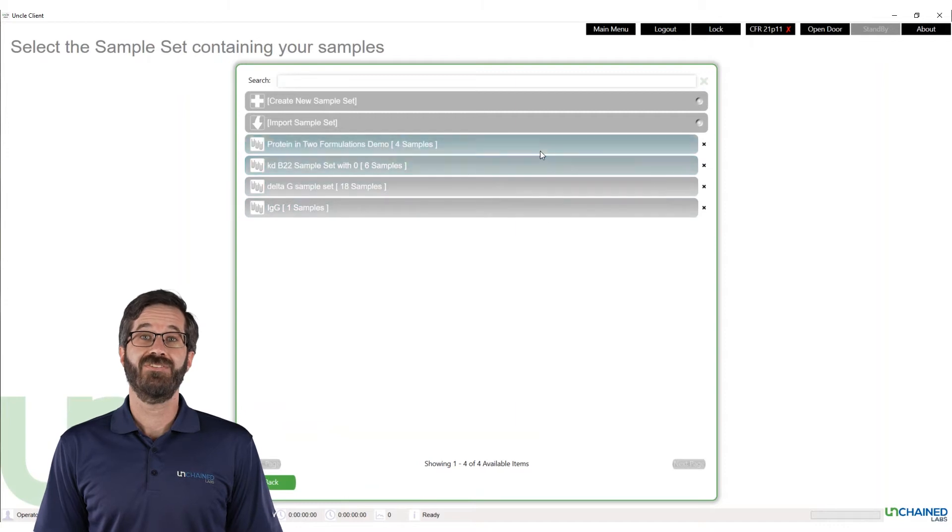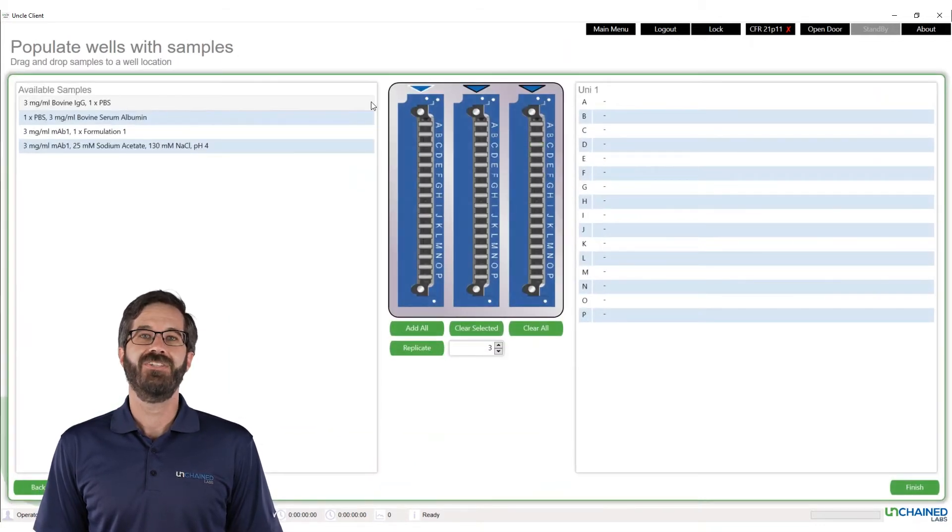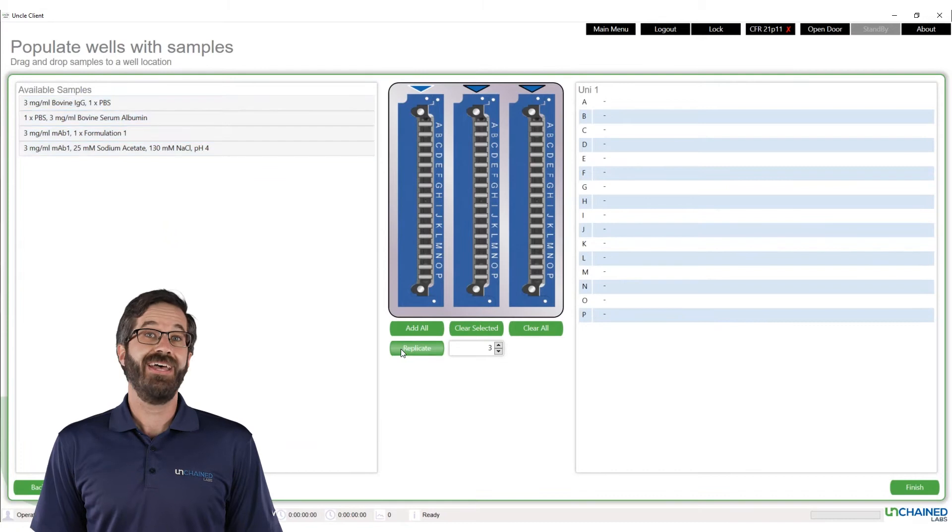If we select an existing list, we then tell UNCLE where each sample is in our unis. With that done, the last major step is designing our thermal ramp.